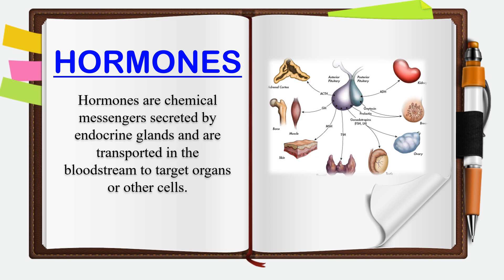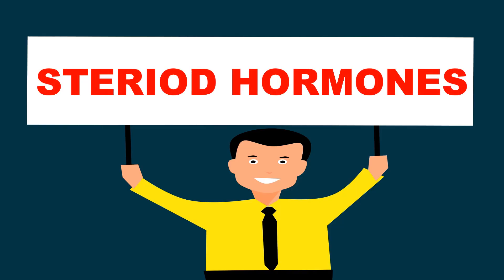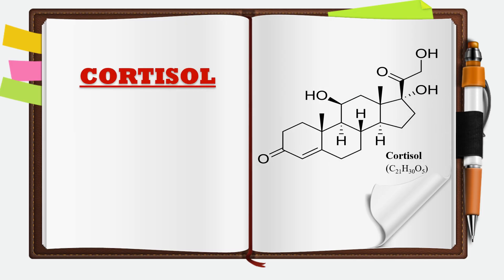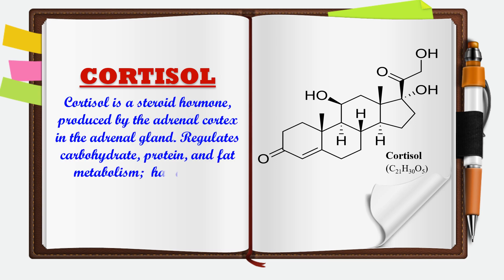The first steroid hormone is cortisol. This hormone is secreted by the adrenal cortex of the adrenal gland and it regulates carbohydrate, protein, and fat metabolism. It is also involved in the anti-inflammatory reaction. Regarding its structure, it is a 21 carbon atom molecule and the molecular formula is C21H30O5.